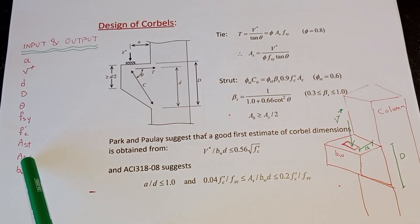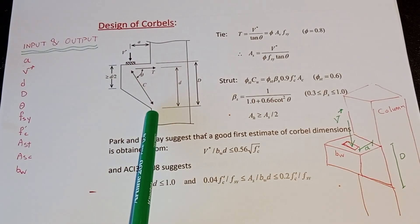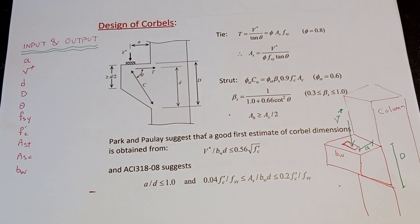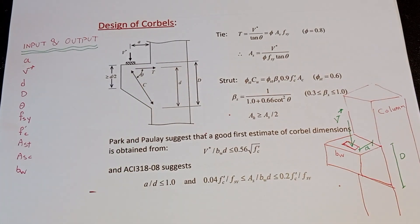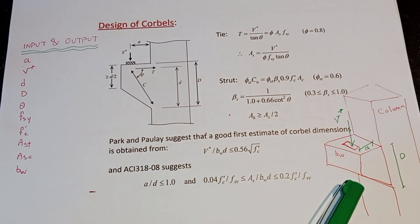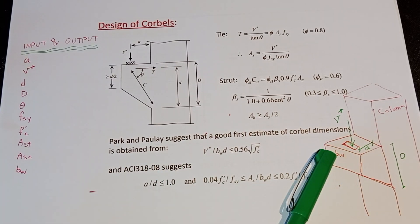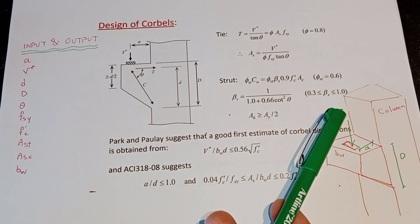Ast is the reinforcement area for tension bars and Asc is the reinforcement area for compression bars. In general, the strut compression is taken by the combination of concrete and reinforcement. If the concrete is strong enough to take that compression load, we may not need compression reinforcement — but in general we should always provide reinforcement in all parts, at least for shrinkage control. Finally, bw is the width of the corbel.